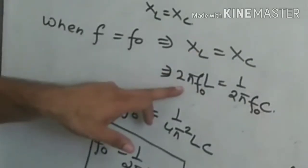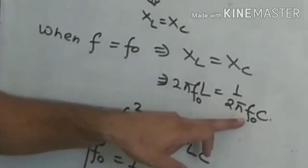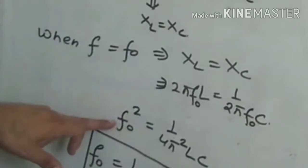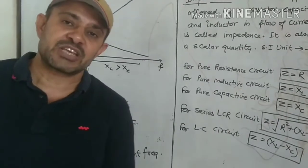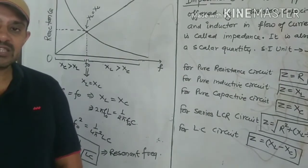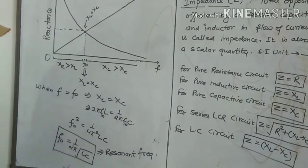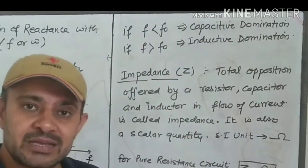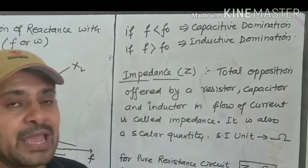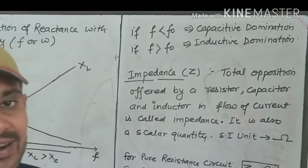At resonance, XL = XC, so 2πf₀L = 1/(2πf₀C). Solving for f₀ gives the resonant frequency formula: f₀ = 1/(2π√LC). If f is smaller than f₀, there is capacitive domination — the capacitor's reactance dominates. If f becomes greater than f₀, there is inductive domination — the inductor dominates the circuit.